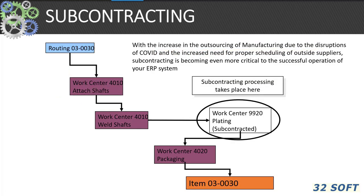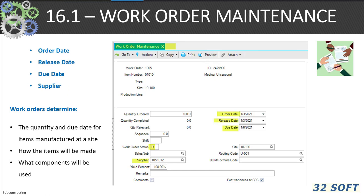In 5.5.1.13 supplier schedule order maintenance, you can set the start date, end date, order review date, and day book set. With the disruption of the supply chain and COVID, subcontracting is becoming more and more critical to successful ERP operations and the need for accurate data. Subcontracting starts with the creation of a work order to issue material for further processing at the vendor, with the order date, release date, due date, and supplier.